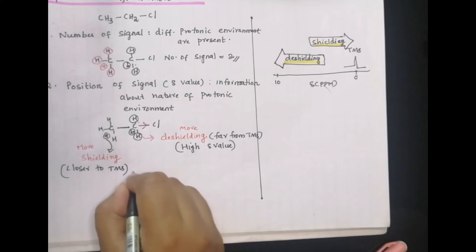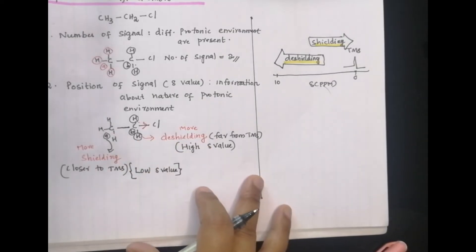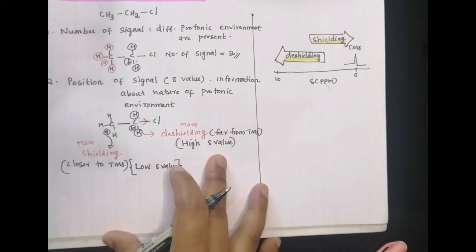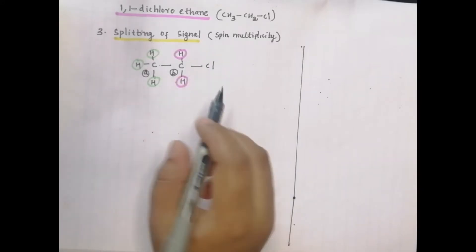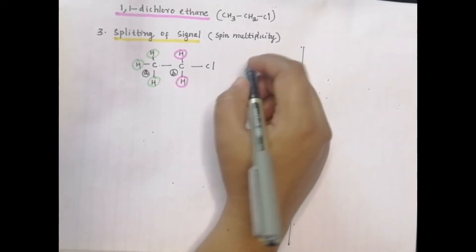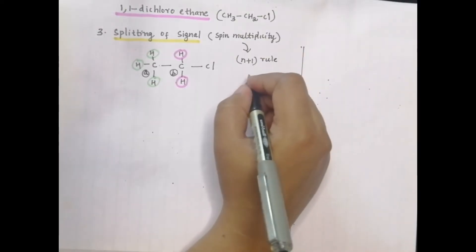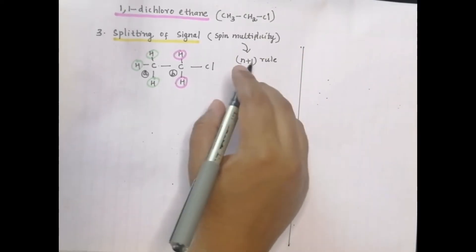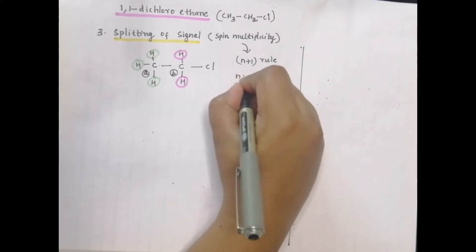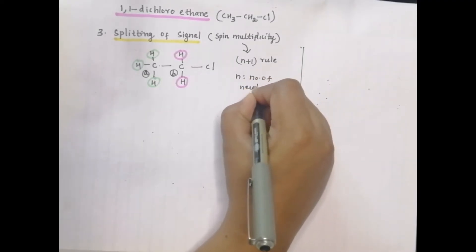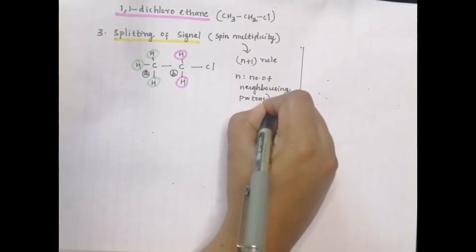Closer to TMS means low delta value; far from TMS means high delta value. That summarizes the shielding and deshielding positions on the chemical shift scale. Now we move on to the splitting of signals — spin multiplicity. We will apply the n+1 rule using the number of neighboring protons.